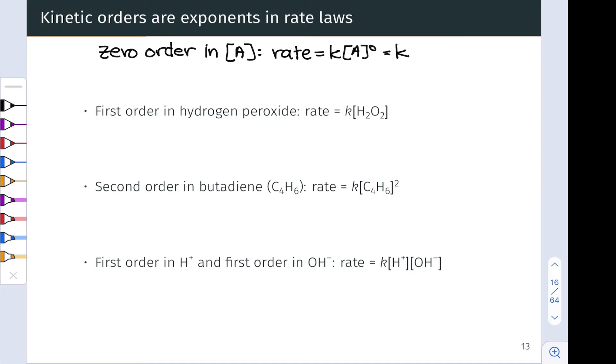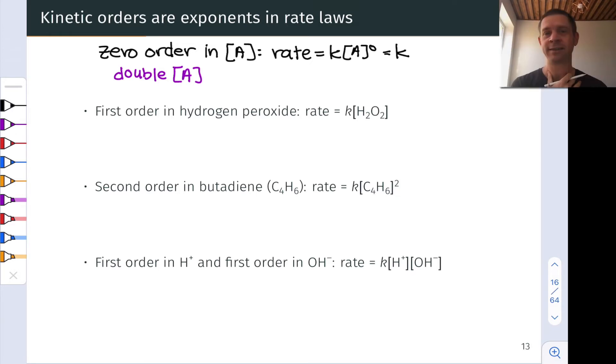Conceptually, this means the rate does not depend on the concentration of A. Now let's think about what happens if we change the concentration of A. The rate doesn't depend on the concentration of A. This means that doubling the concentration of A will cause no change in rate.